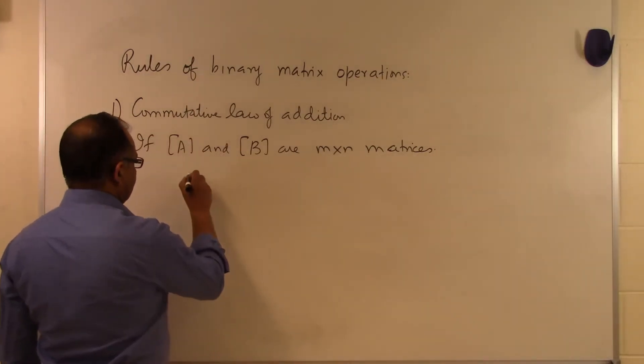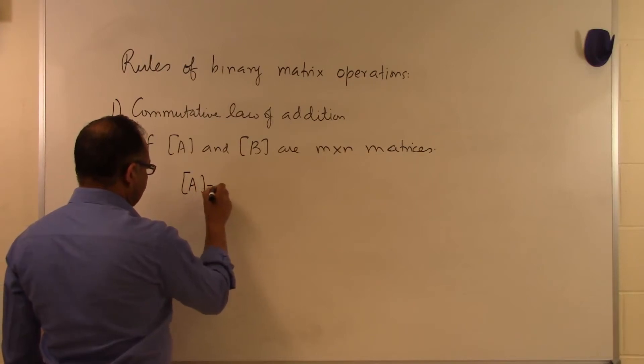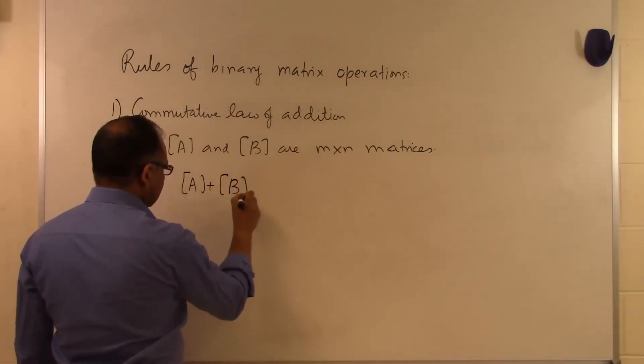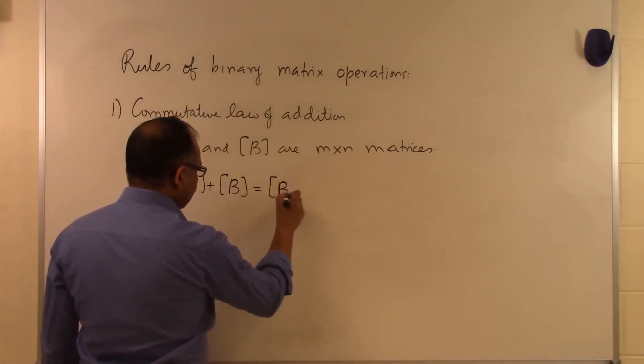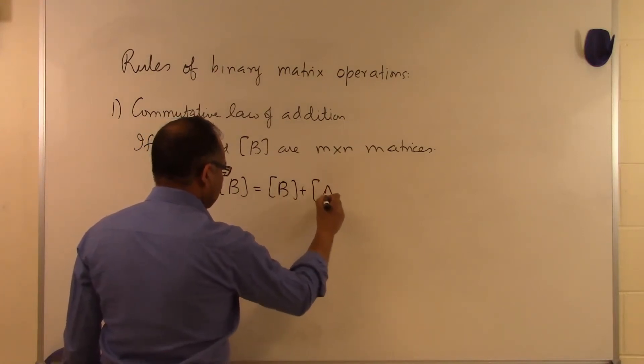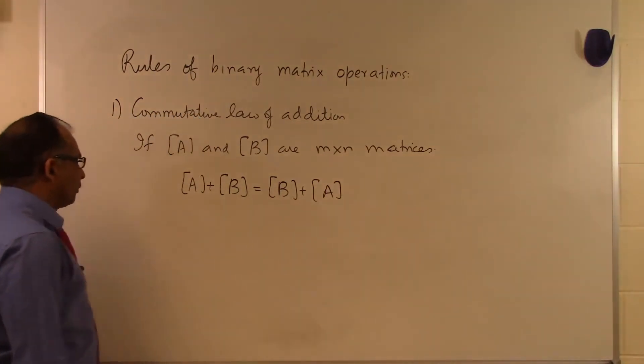But what the commutative law of addition says is that if I add B to A, that's the same as adding A to B. That's the commutative law of addition.